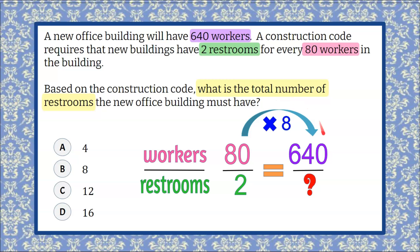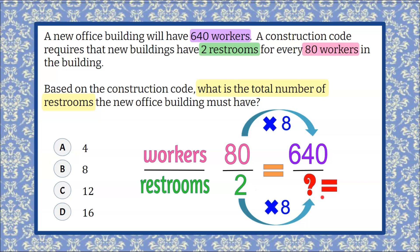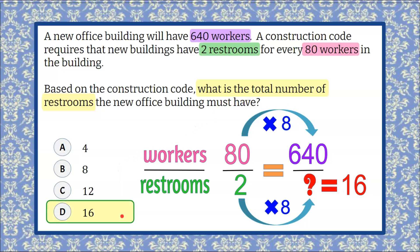Since we multiplied the numerator of this ratio by 8, we must also multiply the denominator by 8 to make equivalent ratios. 2 multiplied by 8 is 16. Therefore, if there are 640 workers in this office building, they must construct 16 restrooms to be up to code. That is answer choice D.